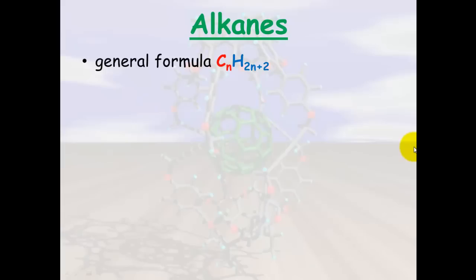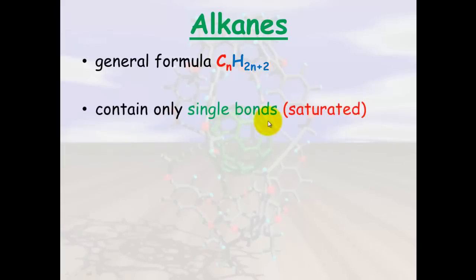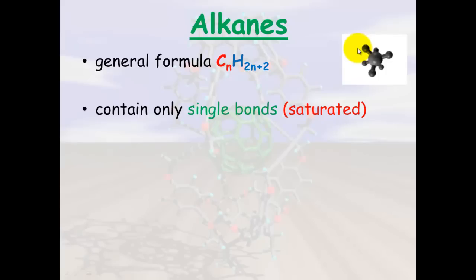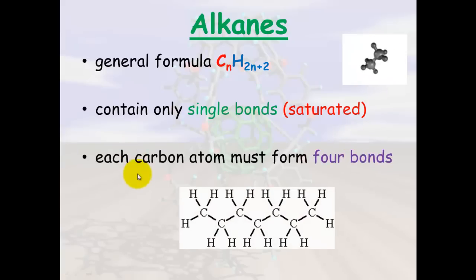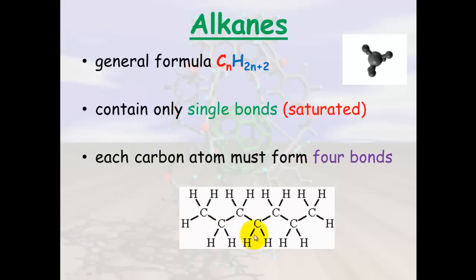An alkane only contains single bonds, so it's a saturated molecule. It's important to remember that single bonds can twist around, so when drawing structures it doesn't matter in which order we draw the atoms around single bonds because they can move around quite easily. However, each carbon atom must form 4 bonds — you can check this carbon here: it's bonded to 1, 2, 3, 4. Each carbon must always form 4 bonds.